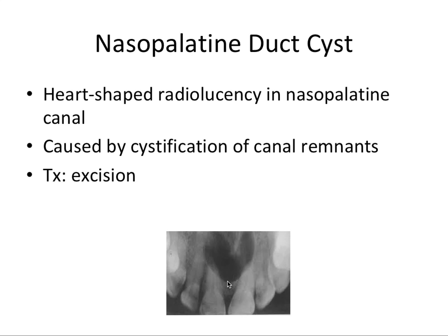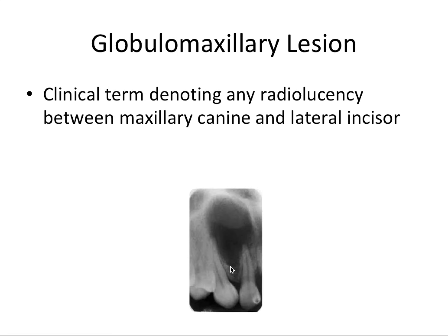The nasopalatine duct cyst has a characteristically heart-shaped radiolucency in the nasopalatine canal, caused by cystification of canal remnants. Treatment is surgical excision. The globulomaxillary lesion is a clinical term denoting any radiolucency between — very specifically — the maxillary canine and the maxillary lateral incisor. This is not a diagnosis; it's just a clinical description of that exact manifestation.